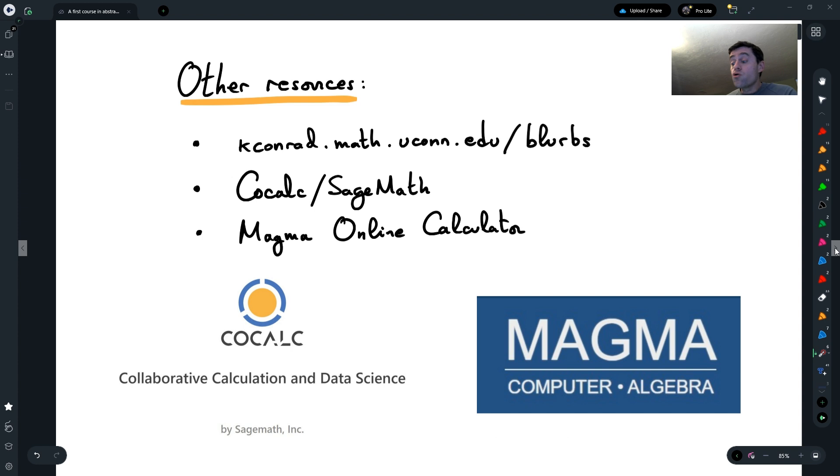By the way, one great reference is my colleague at UConn, Keith Conrad. He has on this page many, many expository articles and pieces about algebra and many other topics in mathematics, but in particular about algebra. There are many very good options of other articles and topics that are covered in his blurbs, as he calls them.